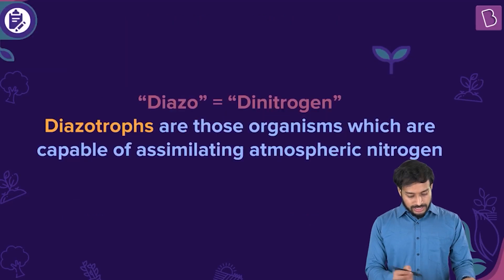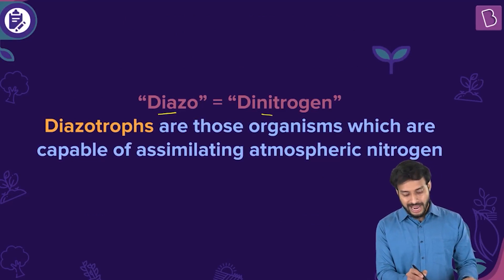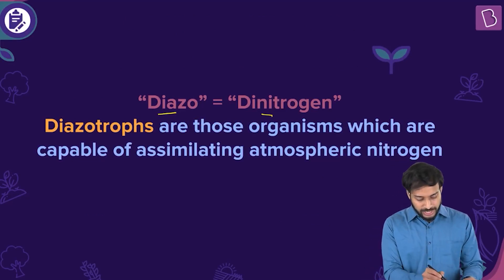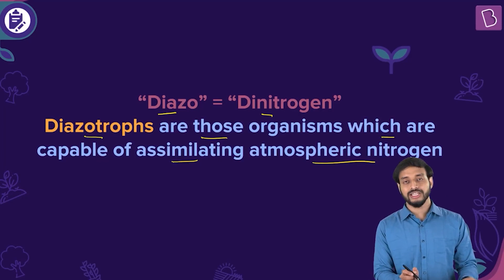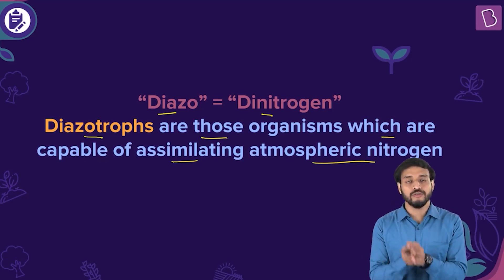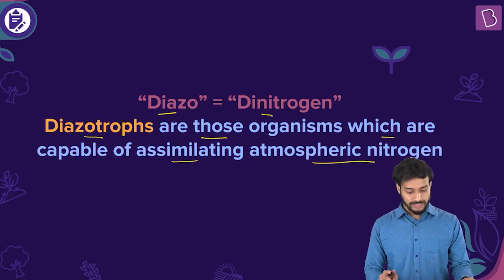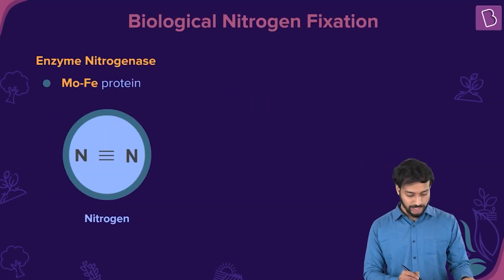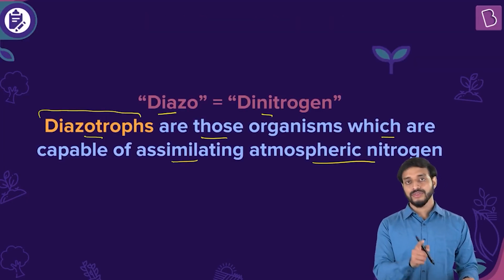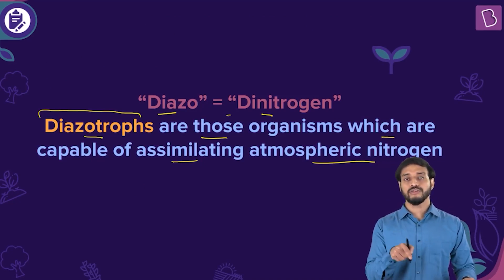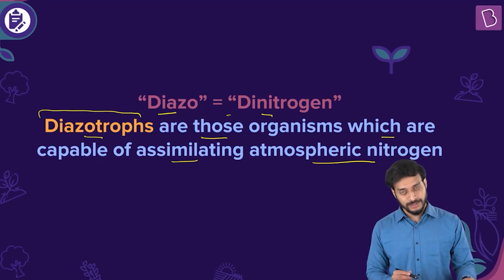Biological nitrogen fixation is performed by nitrogen-fixing prokaryotes, referred to as diazotropes. The prefix 'diazo' means dinitrogen. Diazotropes are organisms capable of assimilating atmospheric nitrogen — basically fixing atmospheric nitrogen and converting it into forms which can be used by plants.